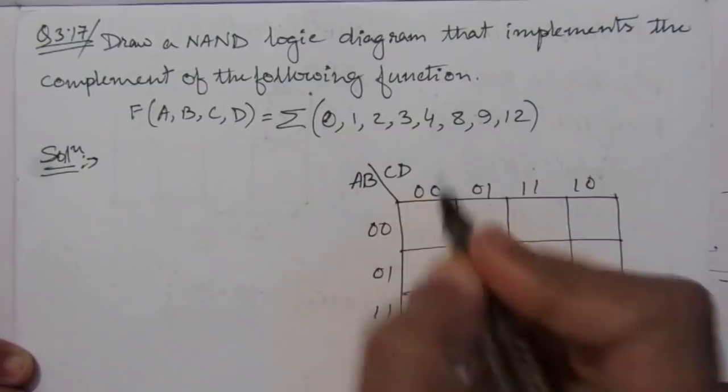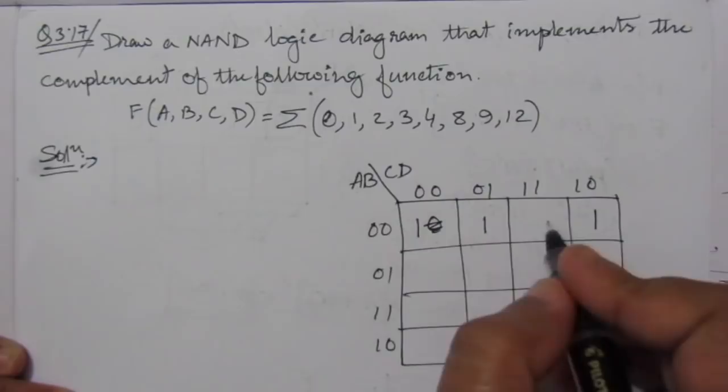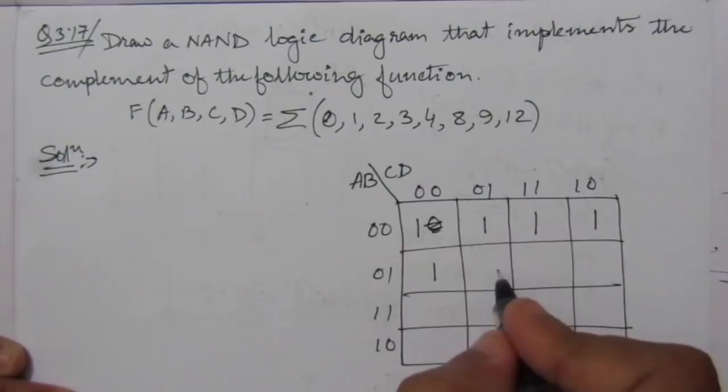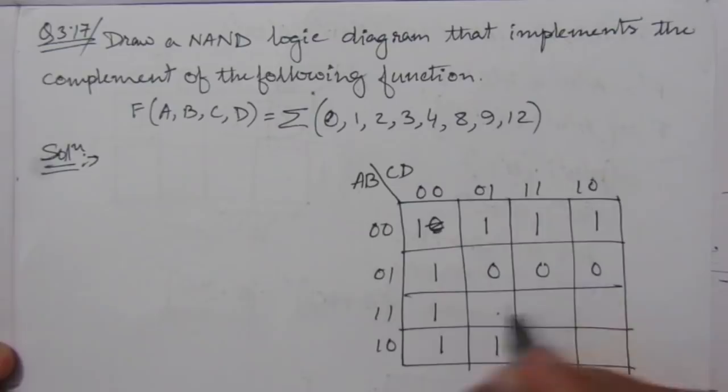We have to put in the sum of minterms values: 0, 1, 2, 3, then 4, 5, 6, 7, 8, 9, 10, 11, then 12, 13, 14, 15. All the other boxes that are not part of the given minterms will have zero values.